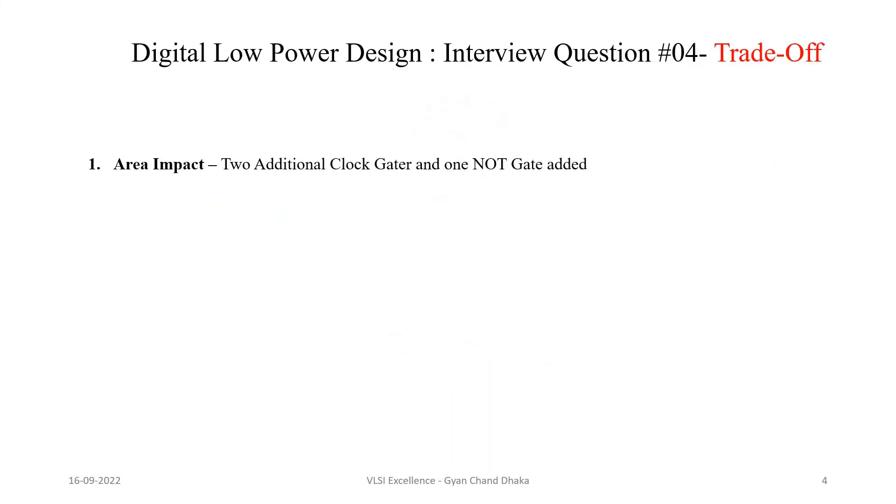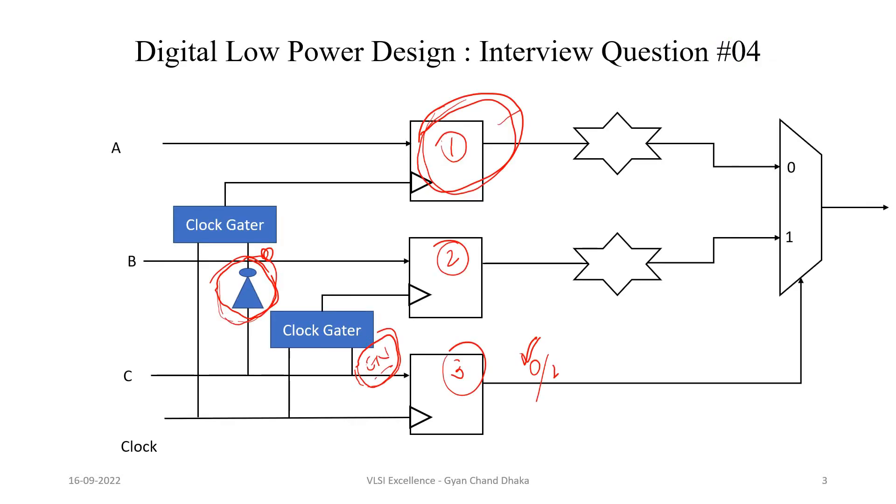Now let's see what is the trade-off. So as you can see here, we have to use two extra clock gaters and one NOT gate. So definitely this modification will result in extra area of this circuit.